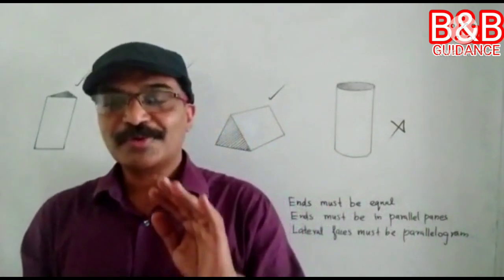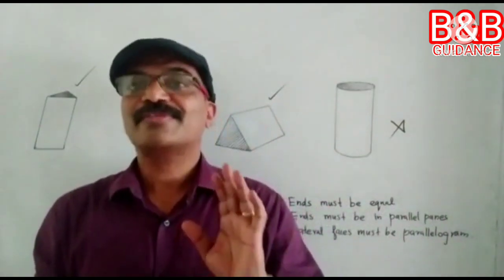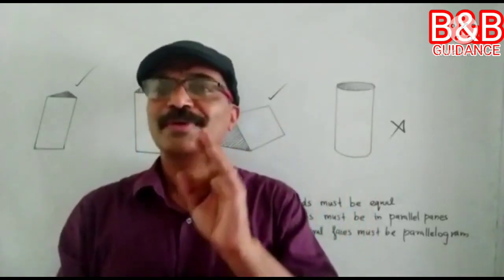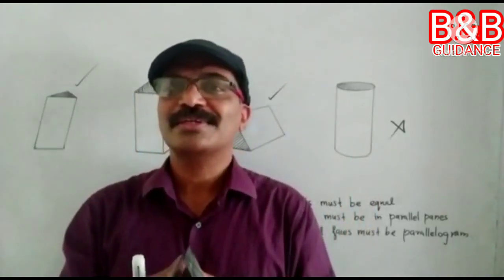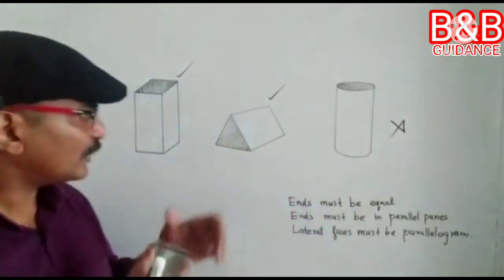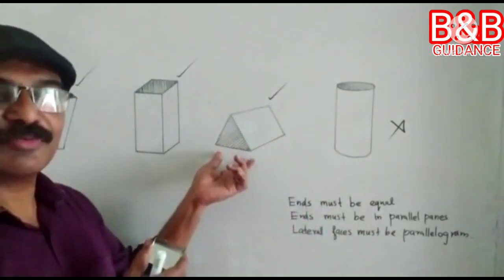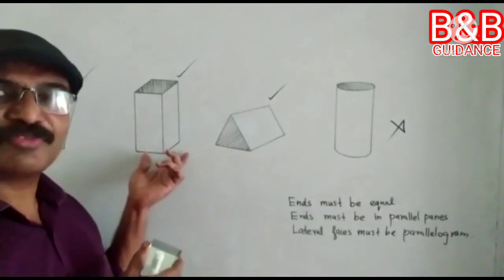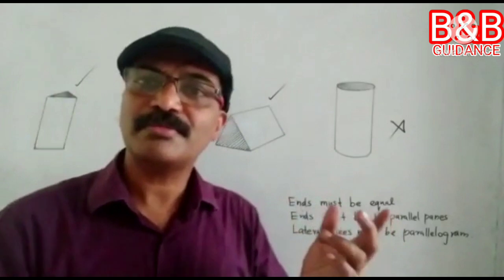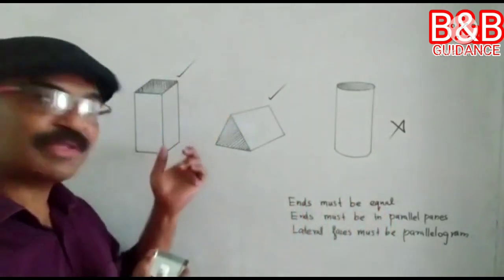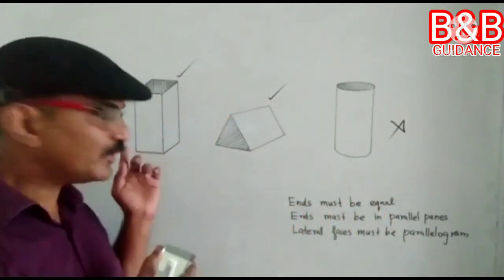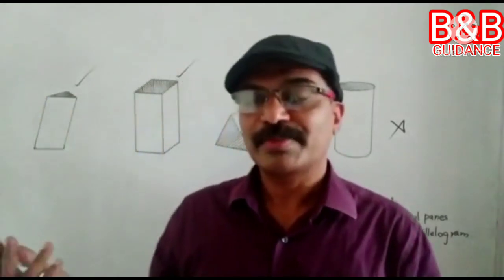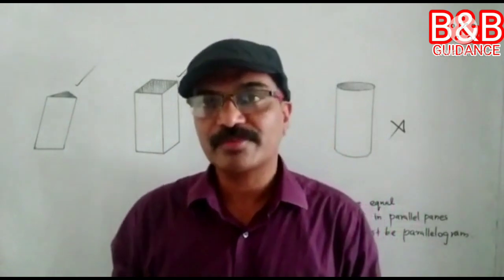When we study optics in 10th standard, when I say prism, we will limit our discussion to a triangular prism. This one is a triangular prism. This one, as I told you, is a rectangular prism. The name of the prism is given depending on the shape of that cross section. If it is a square, we call it a square prism; pentagonal, we call it a pentagonal prism — like that.